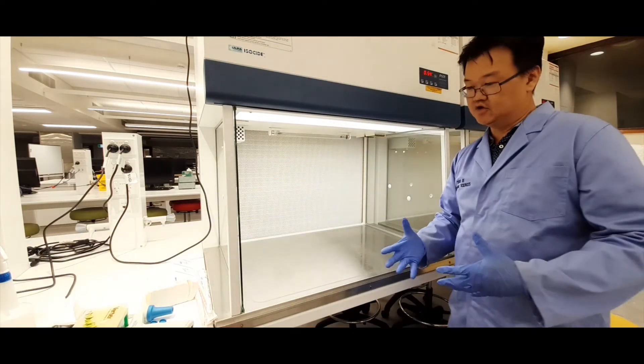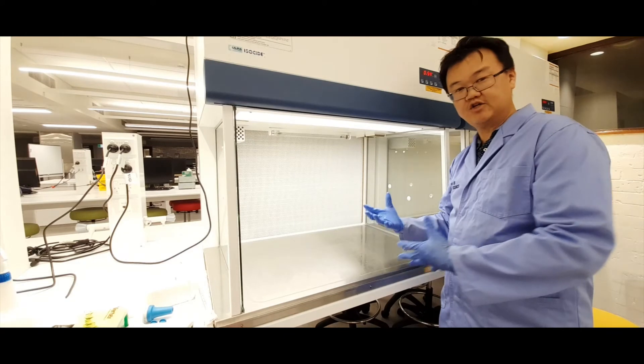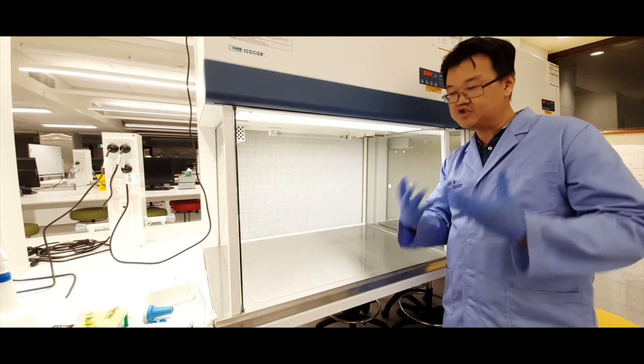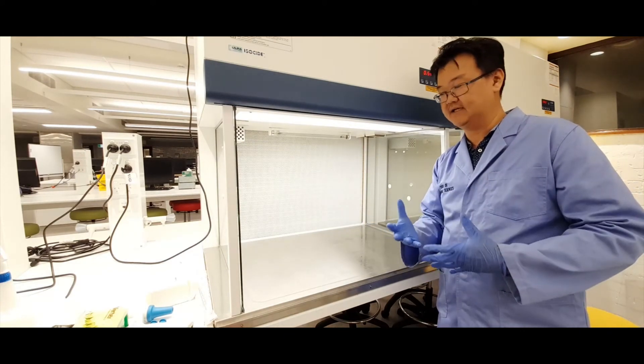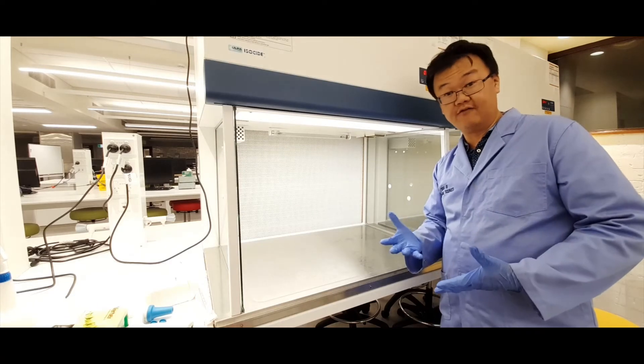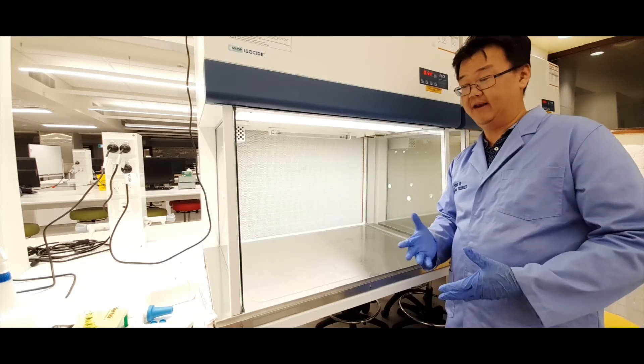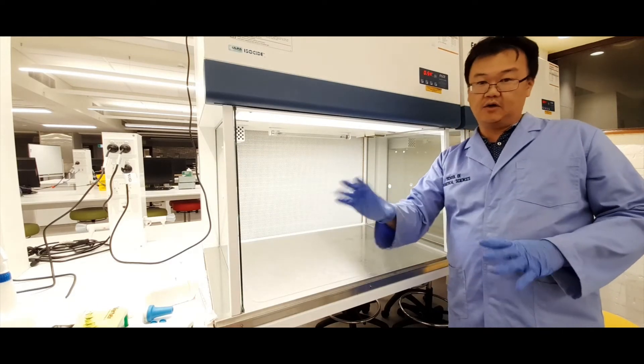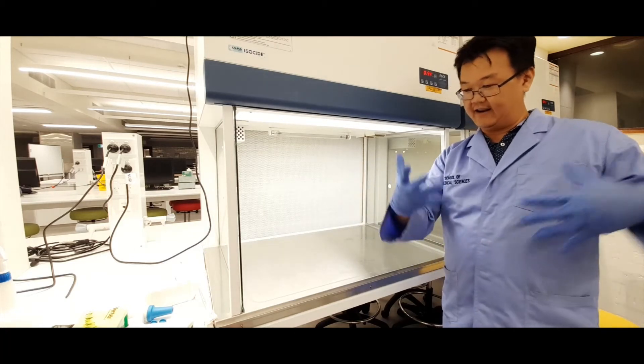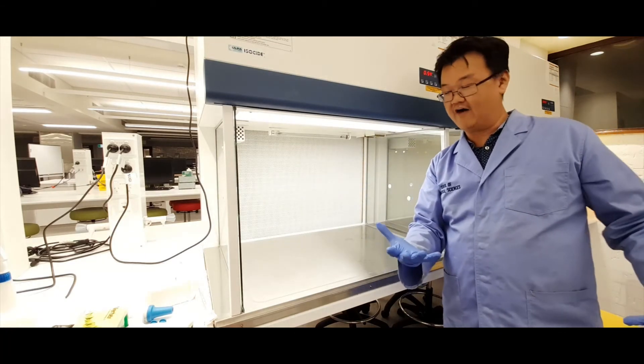And then what you want to do is to bring into the hood any instruments like pipettes or tips that you'll be using for your cell culture experiment. What you want to do is to also spray any items that are coming from outside the hood—that's in a non-sterile environment—you want to spray that with 70% ethanol to clean that before you place them into the hood.